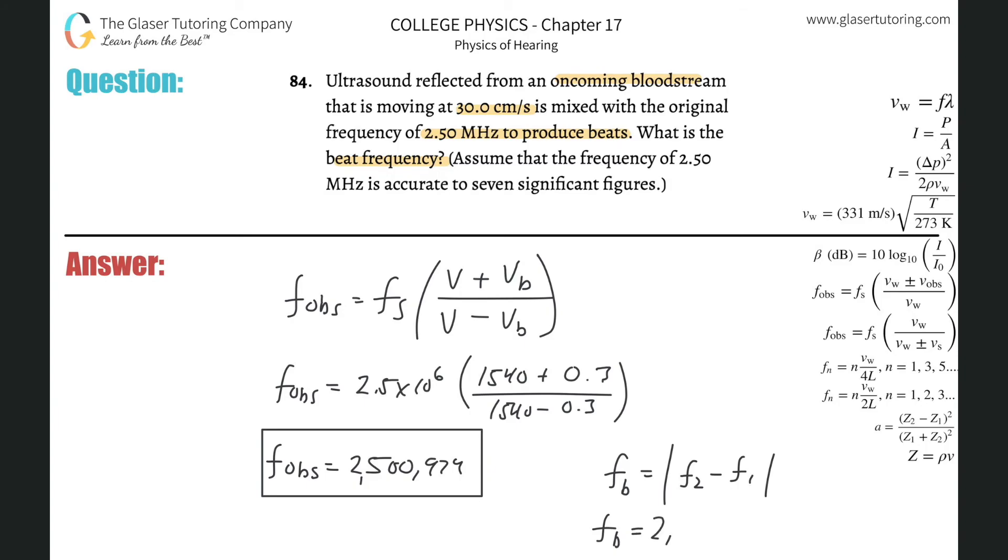So we're going to take the 2,500,974 and subtract from that 2,500,000—that's the other frequency. And what do you get? Obviously here it's just left with 974.